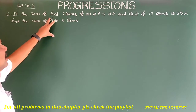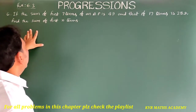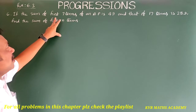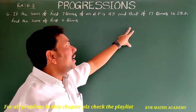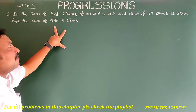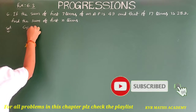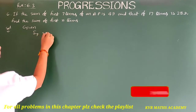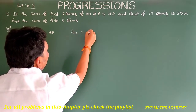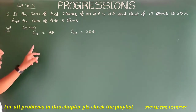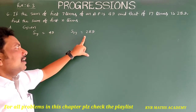Sixth problem: if the sum of the first 7 terms of an AP is 49 and the sum of the first 17 terms is 289, find the sum of the first n terms. Given: S7 = 49 and S17 = 289.